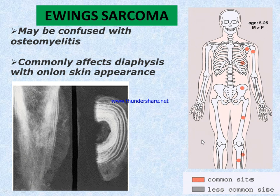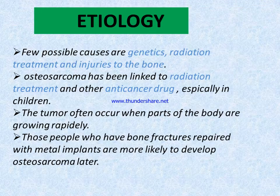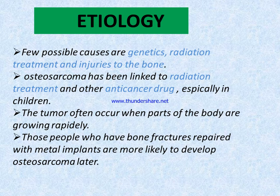Ewing's sarcoma may be confused with osteomyelitis. It commonly affects the diaphysis with an onion-skin appearance. Images show this onion-skin appearance. Regarding etiology of bone tumors, few possible causes are genetics, radiation treatment, and injury to the bone. Osteosarcoma has been linked to radiation treatment and anti-cancer drugs, especially in children. Tumors often occur when parts of the body are growing rapidly. People who have bone fractures repaired with metal implants are more likely to develop osteosarcoma later.